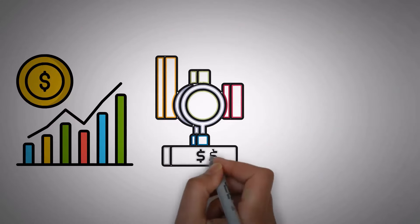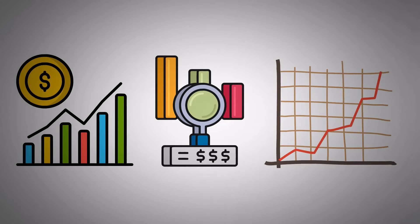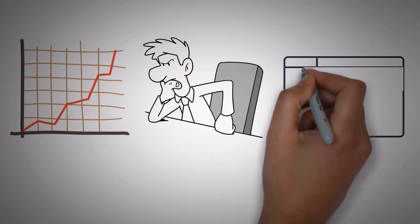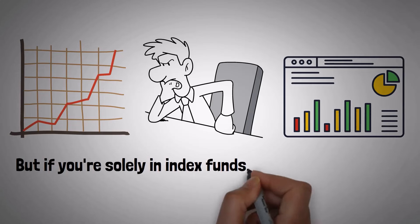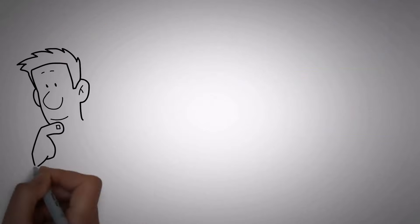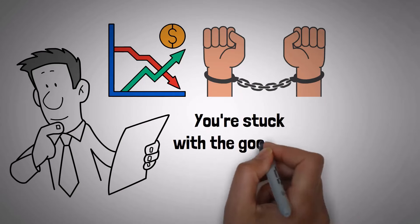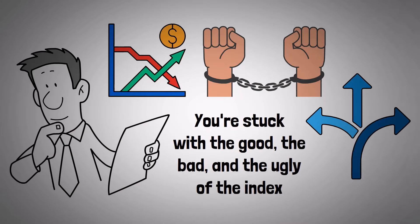but what if you see a storm coming or spot clearer skies in another direction? If a stock within that index starts to get too pricey, more than it's really worth, it ends up having a bigger say in how the index performs. And that's exactly when sharp investors would usually think about pulling back, maybe selling off a bit of that stock to avoid a potential drop. But if you're solely in index funds, you can't make those moves. Even if you've got a hunch or solid evidence that a stock is about to soar or plummet, your hands are tied. You're stuck with the good, the bad,